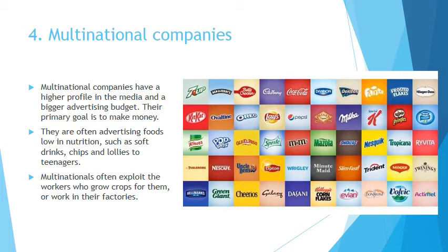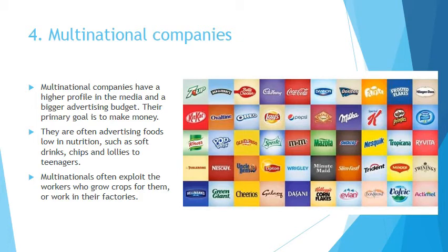Multinational companies — or transnational companies — are huge companies with their base usually in a developed country and smaller offices and factories all around the world. They have lots of money and a high media profile, and their big goal is to make money. They often make foods that aren't very healthy, and use mass marketing to target teenagers. These multinational companies can also exploit workers who grow crops for them — often their factories are in poorer developing countries, similar to the sweatshops you may have learned about in geography.